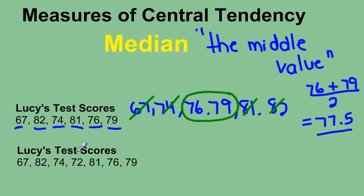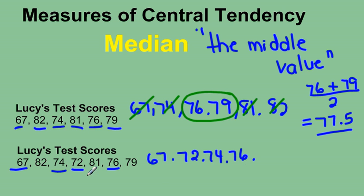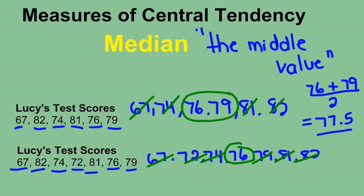If I look at her test scores with an extra value added, let's write them again in order from smallest to largest: 67, 72, 74, 76, 79, 81, 82. Now when we go to find our middle value, we should have just one left, and that will be our median. So our median, therefore, is 76.